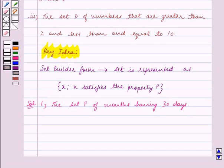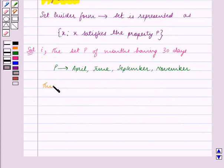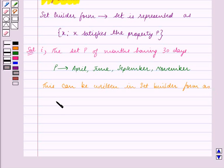Now we know that the months April, June, September, and November are the months having 30 days. So the set P will contain the elements April, June, September, and November. Now this can be written in set builder form as set P is equal to x such that x is a month having 30 days.